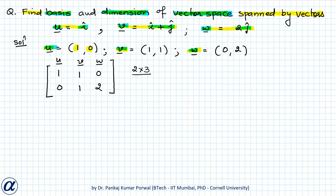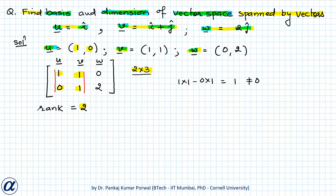In the minor method, the rank of a matrix equals the largest size of non-zero minor we can find in that matrix. Since our matrix is of size 2×3, the largest minor we can form is of size 2×2. Let's consider this 2×2 minor — its value will be 1×1 minus 0×1, which equals 1, which is not equal to 0. So the rank of this matrix is equals to 2, meaning there are two linearly independent vectors.